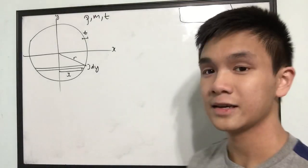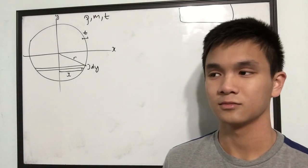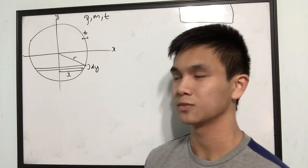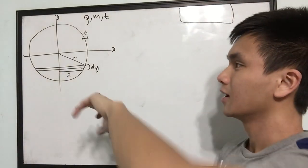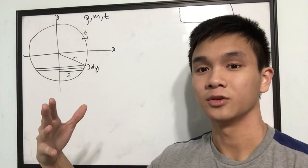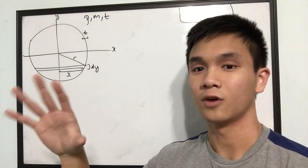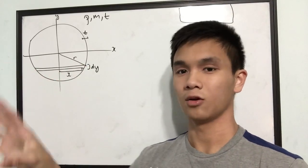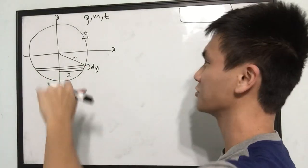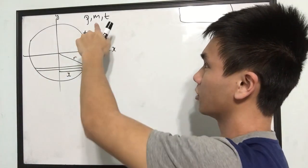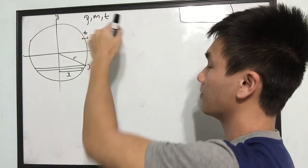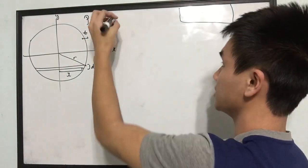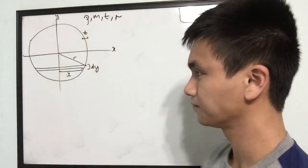So, this is a hollow sphere — there's space inside, that's what holo means. The mass is uniformly distributed throughout the volume of this shell. It has a density of rho, total mass of m, thickness t, and a radius of r.